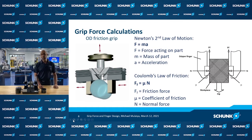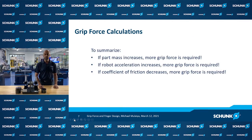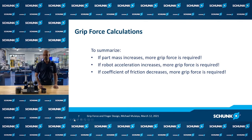We will now see how required grip force is calculated. We need to know the maximum part mass, any acceleration or deceleration forces acting on the part, and the coefficient of friction between the part and the gripper fingers. In short, if the part mass increases, more grip force is required. If the robot or gantry acceleration increases, more grip force is required. More grip force is required when the coefficient of friction is low, such as for Delrin on aluminum. Less grip force is required when the coefficient of friction is high, such as for HKI elastomer material on aluminum.